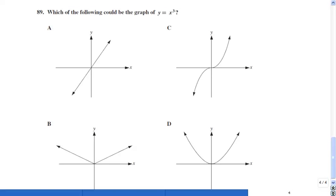Alright Nevada Virtual juniors and seniors, another proficiency exam problem, number 89. This is an example from the California High School Exit Exam, which is the equivalent of Nevada proficiency. The question is: which of the following could be the graph of y equals x to the third?